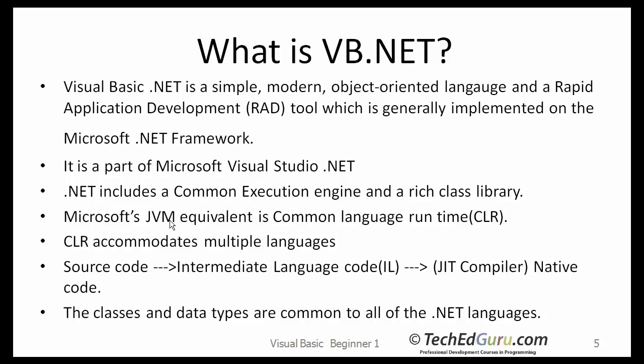This is Microsoft's equivalent of JVM, which is called CLR. CLR accommodates multiple languages. So if you take the source code written in any one of these languages, it is compiled to something called an intermediate language code, which is then compiled to the native code at runtime using the just-in-time compiler. The classes and the data types are common to all the .NET languages.